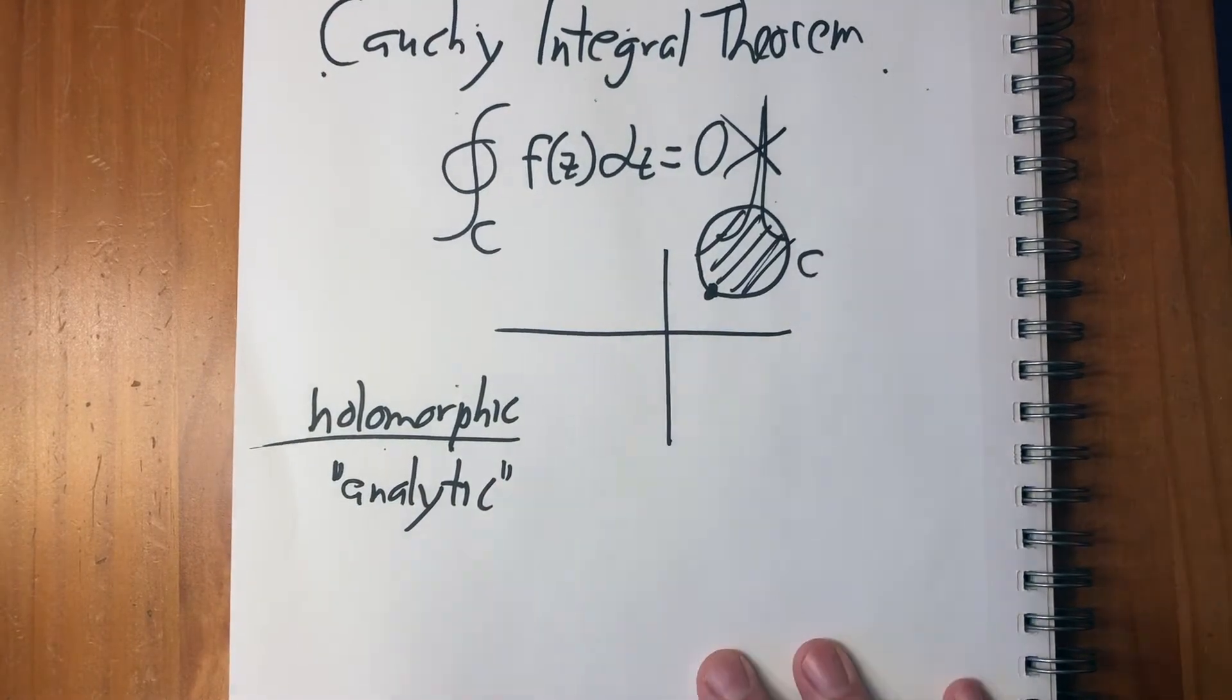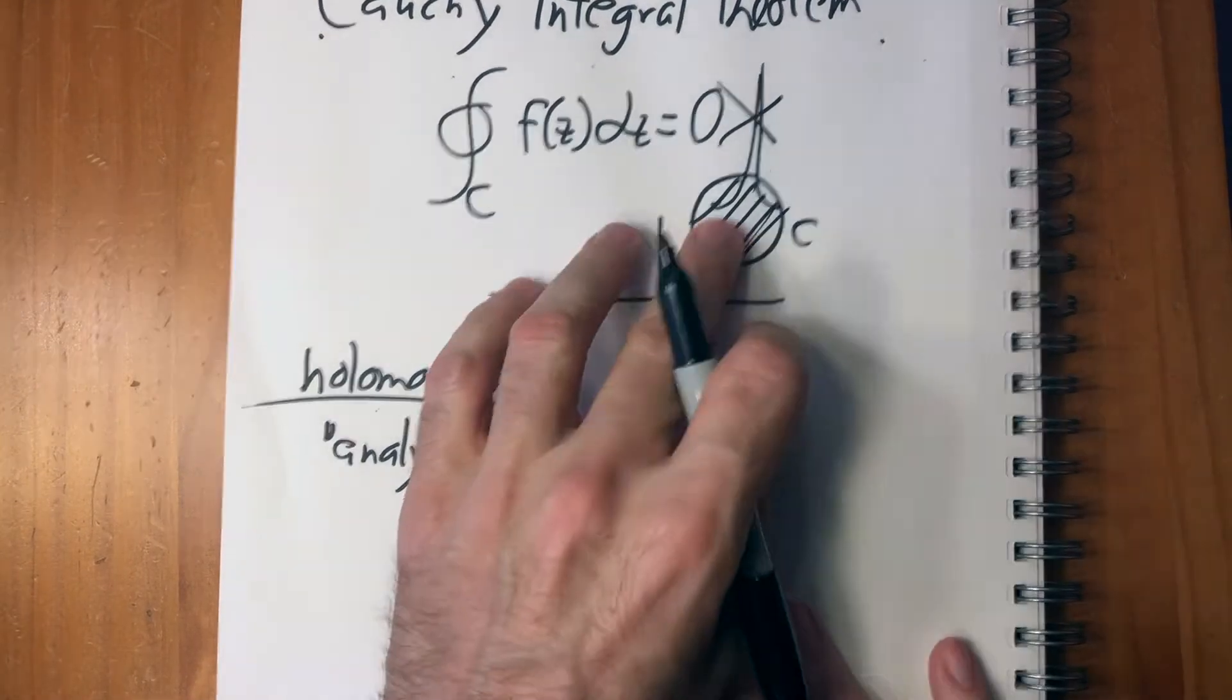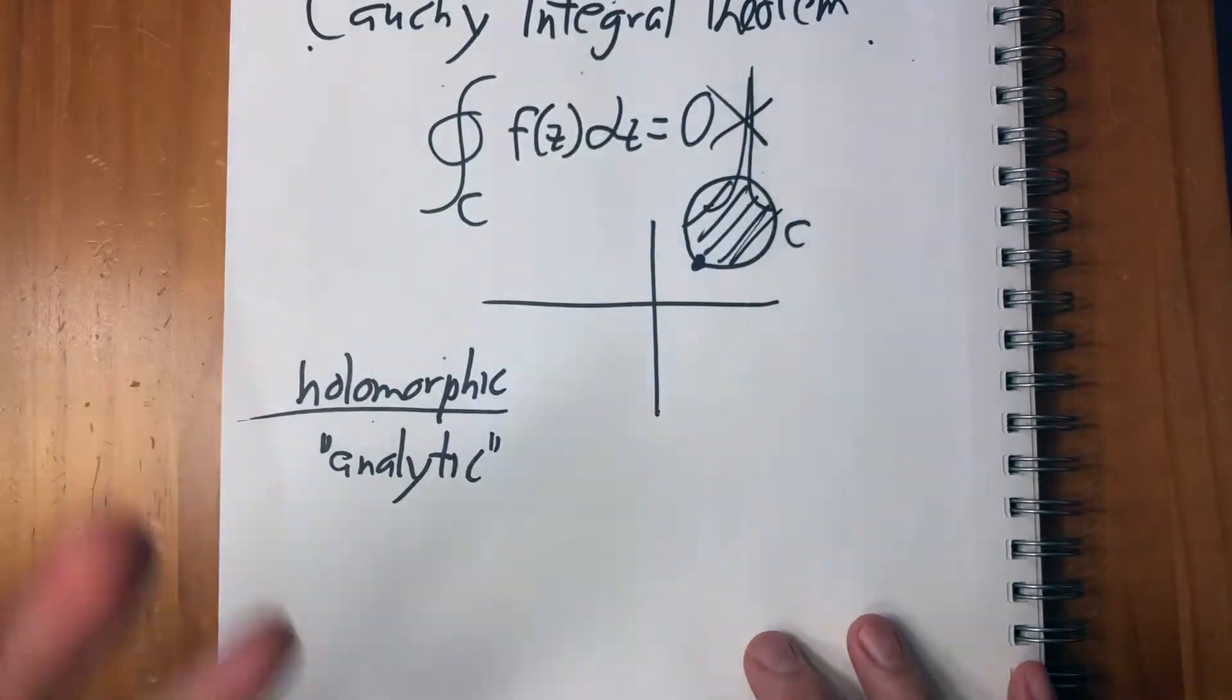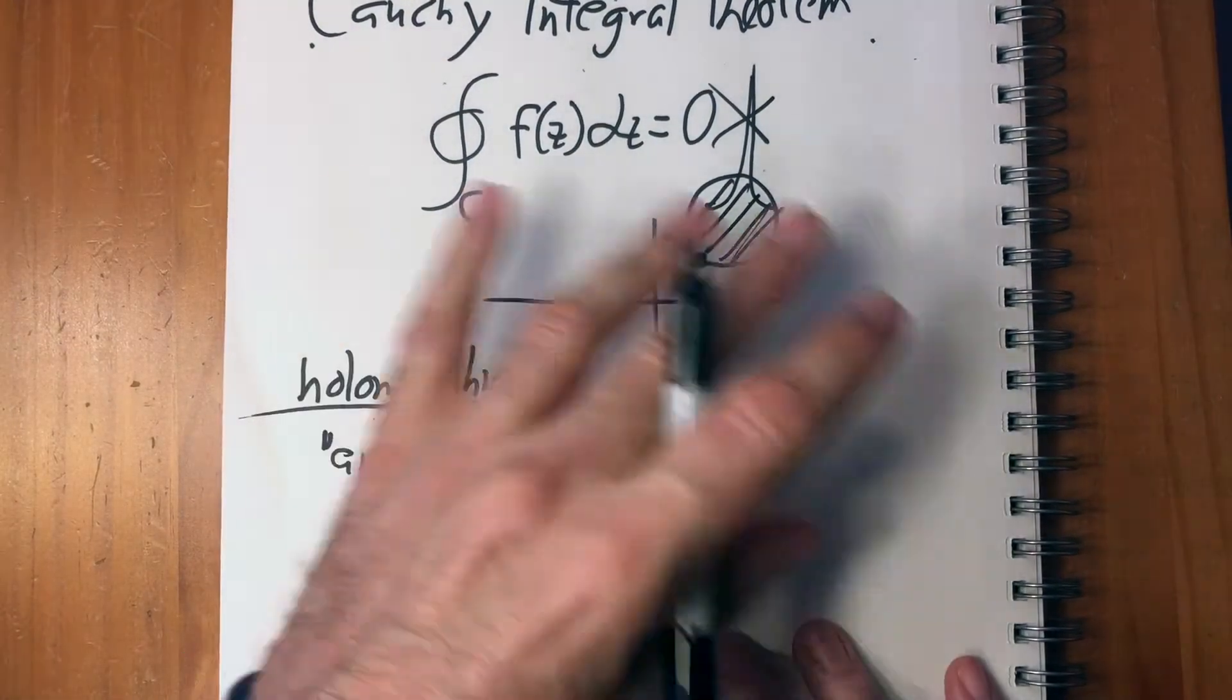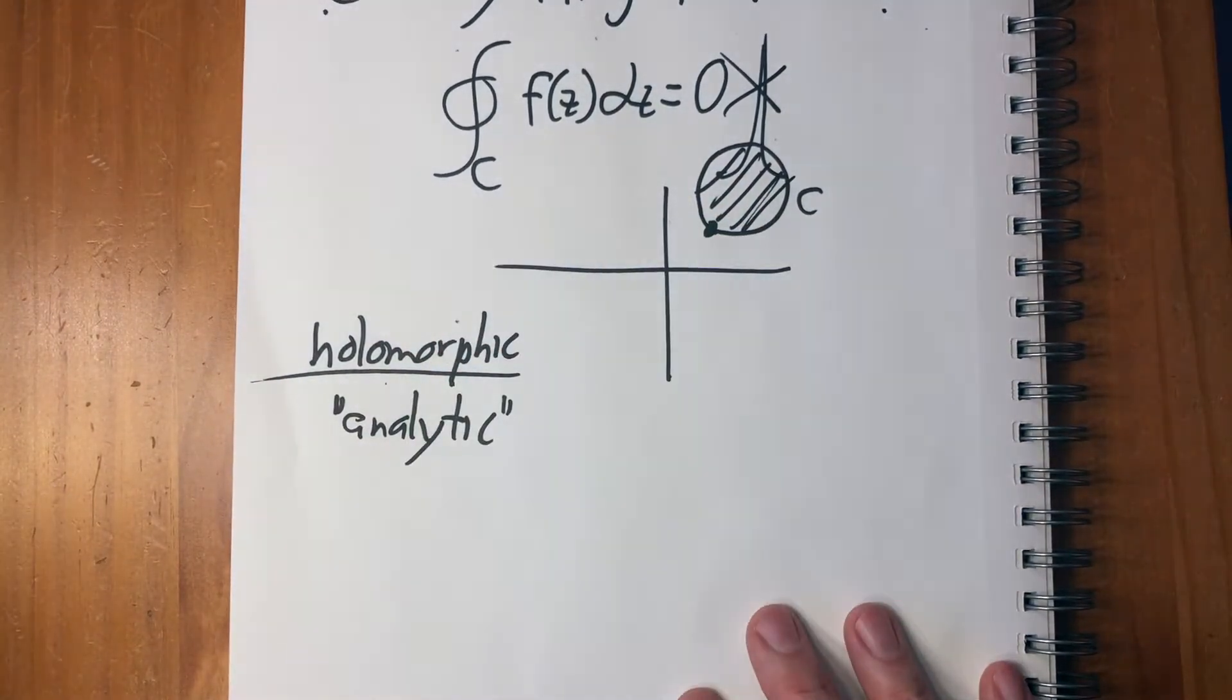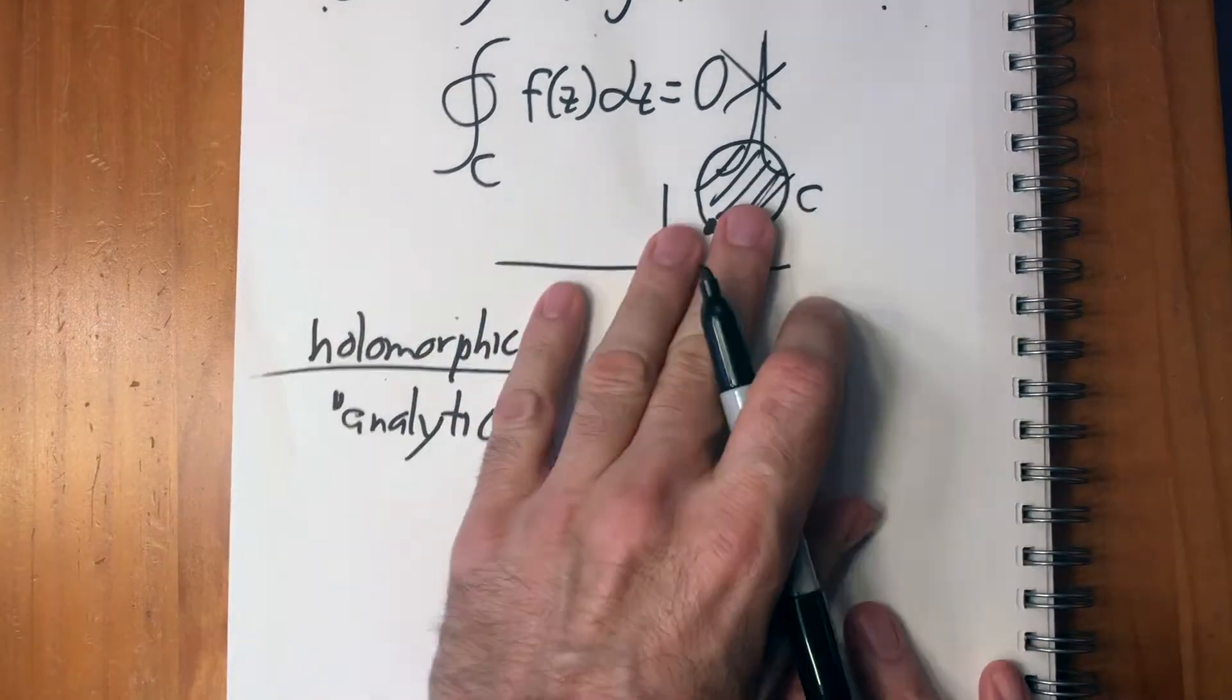That's really fascinating. And again, if you've taken multivariable calculus, that sounds very similar because it is very similar to Green's theorem, which says the same thing over vector fields. And you actually use Green's theorem to prove that. So that's the first thing.